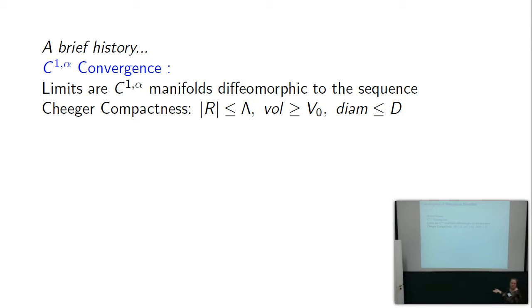This includes the fact that given any sequence of such manifolds, there are only finitely many different C1-alpha diffeomorphism types. By pigeonhole, one repeats for a subsequence, and then you actually get a converging sequence.